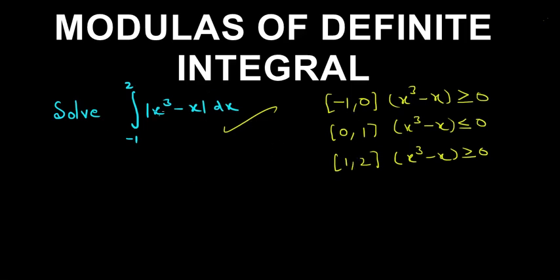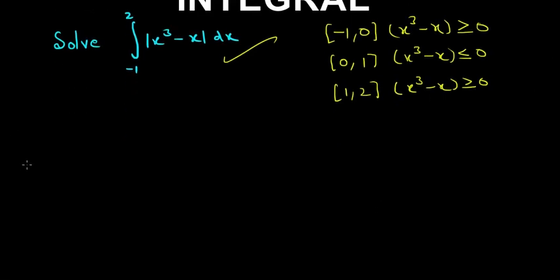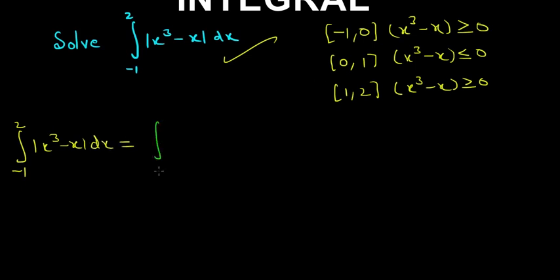Now we just expand these limits and solve a definite integral, which will be really easy. The integration from minus 1 to 2 of the modulus of x cubed minus x dx equals the sum of three integrals: minus 1 to 0, plus 0 to 1, plus 1 to 2.